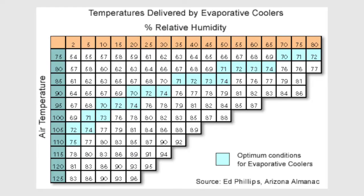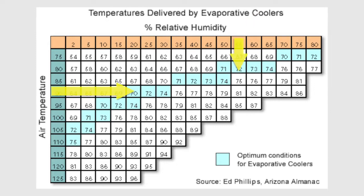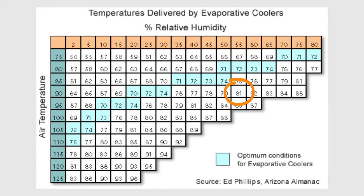For example, in this table you'll see that with an ambient temperature of 90 degrees Fahrenheit and a relative humidity of 55%, evaporative cooling can only lower the temperature to about 81 degrees Fahrenheit. This is still above the thermoneutral zone of most animals.